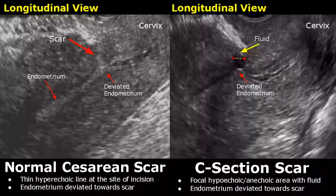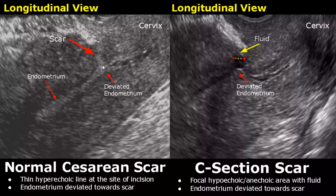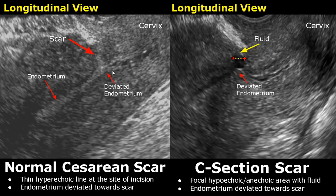Here is an image of a normal caesarean scar. It can appear as a hyperechoic line at the site of the incision in the myometrium. Also, the endometrium will be deviated towards the scar.